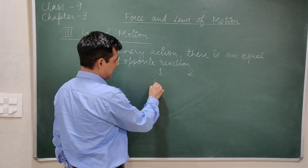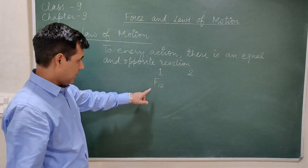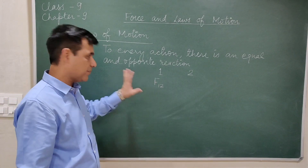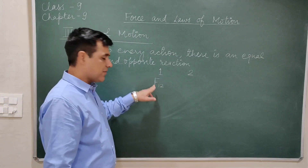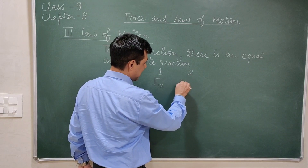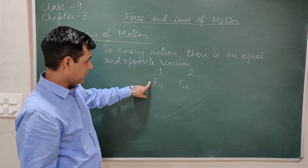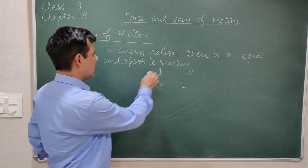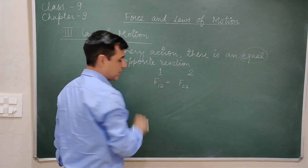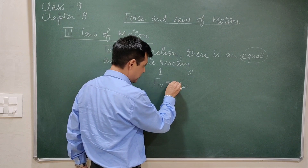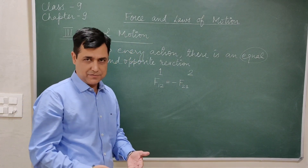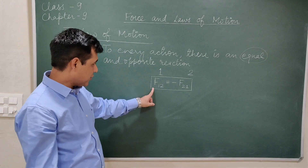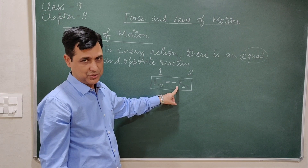Let the force applied by object one on object two be F12 — pronounced as force applied by the first object on the second object. So F12 is the action, and the force applied by the second object on the first is F21. The action and reaction are equal and opposite, so we place a minus sign. The formula for the third law of motion is: F12 is equal to minus F21.